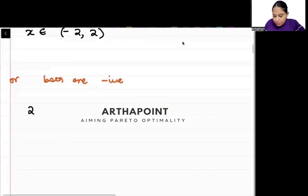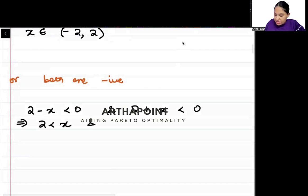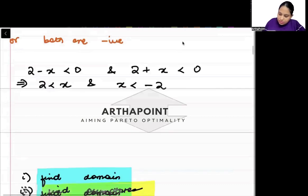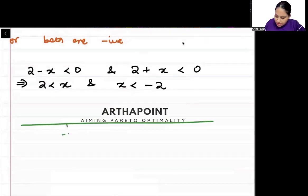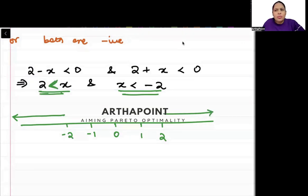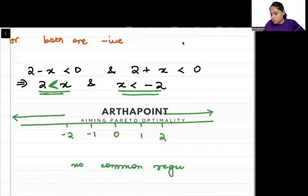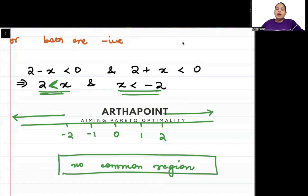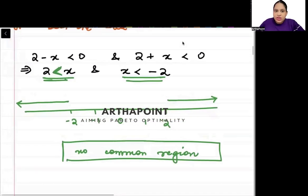Now let's see if both are negative, meaning (2 minus x) less than 0 and (2 plus x) less than 0. Then 2 less than x and x less than minus 2. If I plot this on the number line: minus 2, minus 1, 0, 1, 2. x less than minus 2 means here, x greater than 2 means here. Is there any common region between the two? No common region.